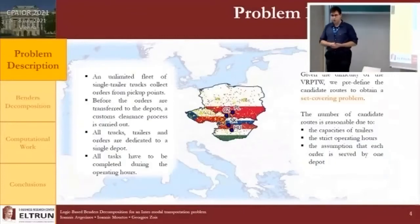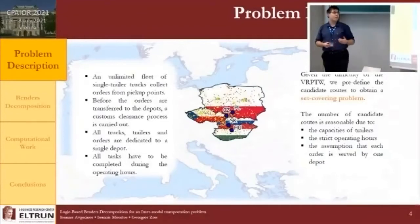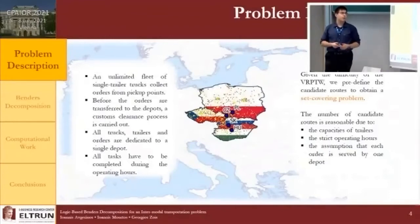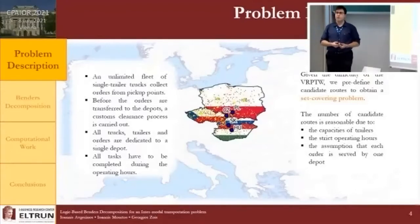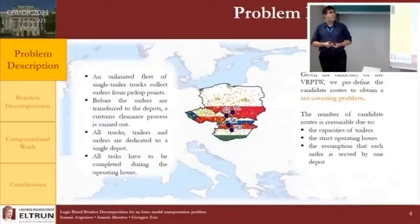In the disposition stage, a fleet of single-trailer trucks must collect orders from pickup points and transfer them to depots located in Poland, Czechia, Slovakia, and Hungary. Before orders are transferred to the depots, a customs screening process must be carried out by specific companies. All trucks, trailers, and orders are dedicated to a single depot, and all tasks must be completed during operating hours. This setting is identified as a vehicle routing problem with time windows.